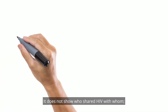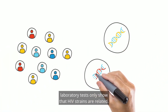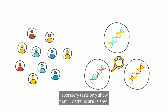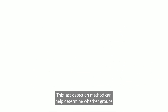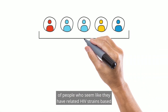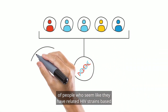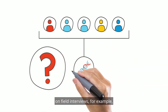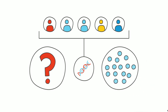It does not show who shared HIV with whom. Laboratory tests only show that HIV strains are related. This last detection method can help determine whether groups of people who seem like they have related HIV strains based on field interviews, for example, are, in fact, part of the same cluster.